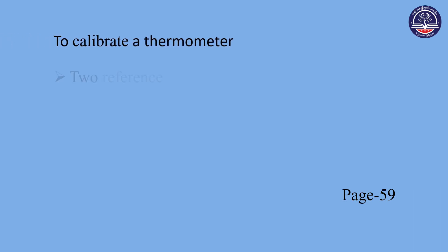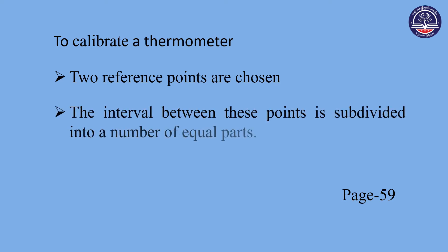To calibrate the temperature scale, we have to choose two reference points. The reference points are different from each other. The interval between these points is divided into a number of equal parts.